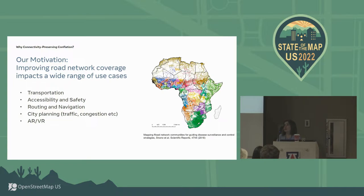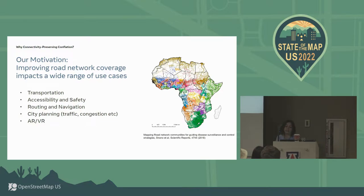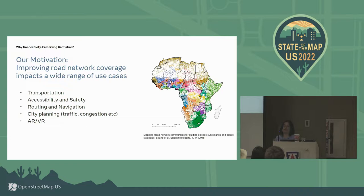For example, you would like to know the ramps on the sidewalk network. Or in routing and navigation, you want to be confident that the navigation engine will lead you to a place where there exists a road to make the maneuver it's telling you. Or in city planning — as the previous presentation highlighted — using road networks for traffic and congestion. And recently there are also various use cases with self-driving cars and AR and VR, using the availability of these roads in various experiences.